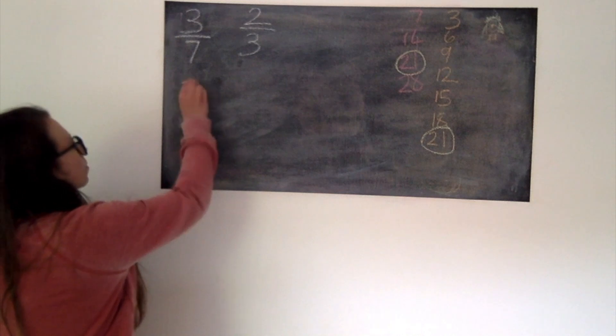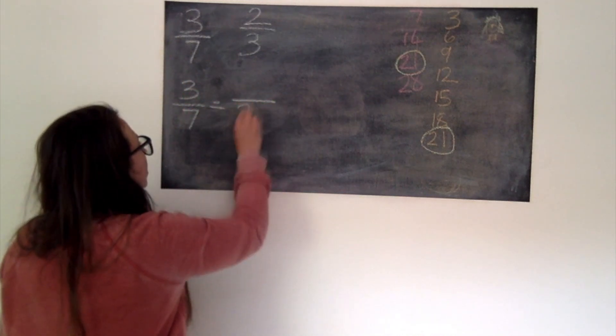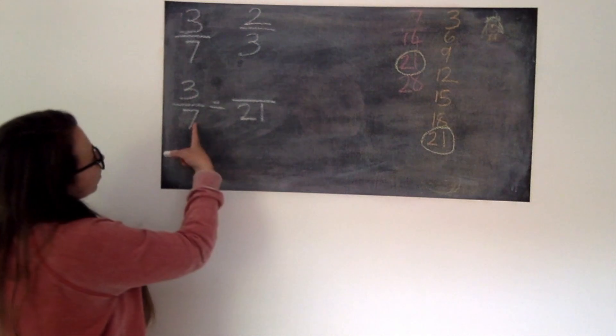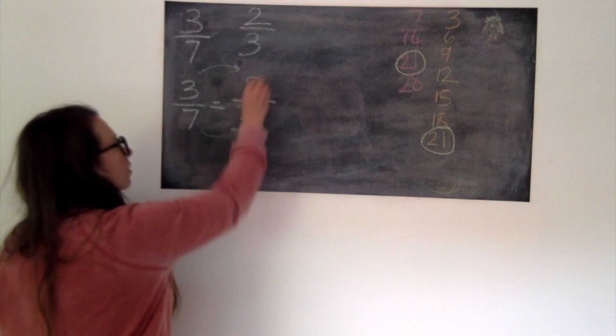Starting off with 3/7ths. 3/7ths is the same as how many 21sts? So 7 times by 3 is 21. Do the same to our numerator gives us 9.